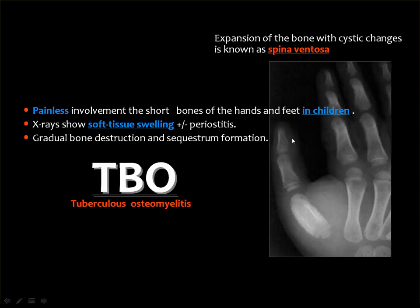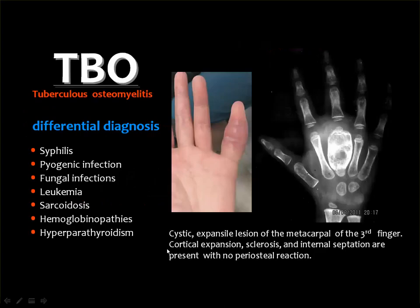One form of TB of the skeleton is TB dactylitis — also known as spina ventosa — which is painless involvement of the short bones of the hands and feet in children. X-ray may show soft tissue swelling, periosteal reaction, and the bone becomes expanded, then gradually destroyed and necrotic with formation of sequestra. This can be differentiated from enchondromas by clinical picture and lesion appearance — it is not a pure osteolytic lesion, and there is no matrix calcification as seen in enchondroma.